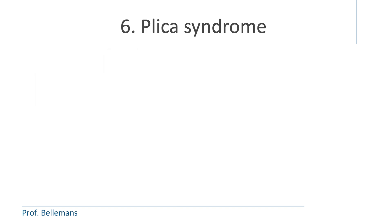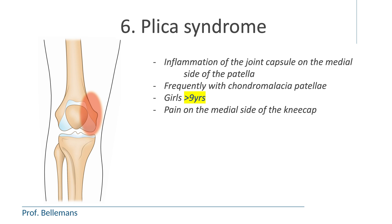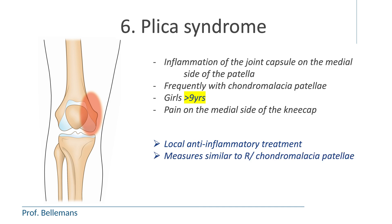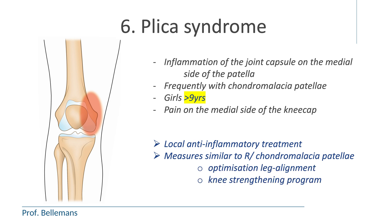In Plica syndrome, there is inflammation of the joint capsule on the medial side of the patella. It frequently comes together with chondromalacia patellae, so often in girls from the age of 9. The pain is on the medial side of the kneecap. In most cases, the inflammation is temporary, and local anti-inflammatory treatment with ice applications and an anti-inflammatory gel or patches is sufficient, combined with optimization of leg alignment through corrective exercises and appropriate orthotics, together with a knee strengthening program.